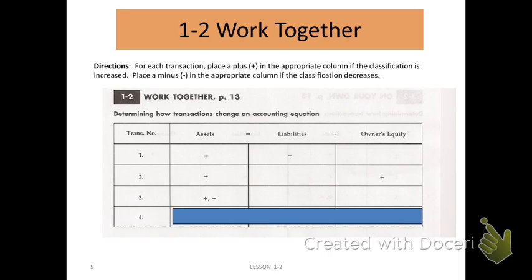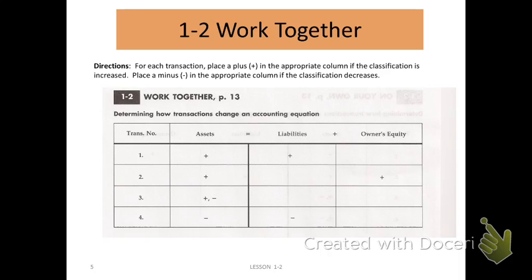In our fourth transaction, it tells us that we paid cash on account. The two accounts are cash and accounts payable. Paying cash sounds like a decrease to cash. And on account means we're going to decrease our liability — we're paying off our bill. So that's a decrease to cash as an asset, and also a decrease to our liability because now we're paying off what we owe. The left side decreased and the right side decreased by the same amount, so our accounting equation is still in balance.